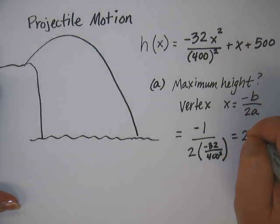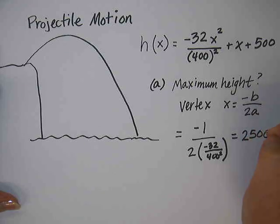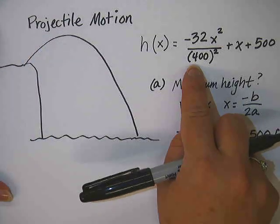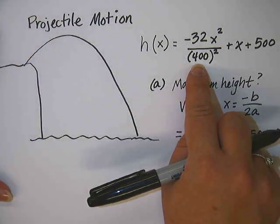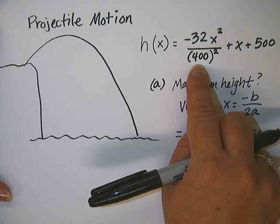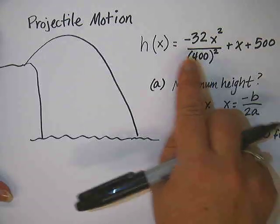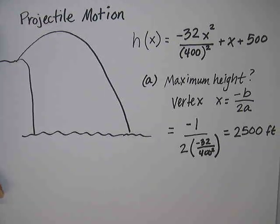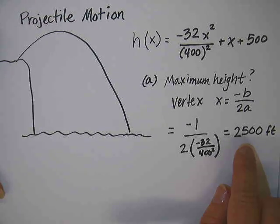If you put that in your calculator, you get 2,500, and I believe this is in feet. I guess the 400 has to do with how fast the projectile is going, at like 400 feet per second. But again, we didn't have to figure that out, they just gave it to us.